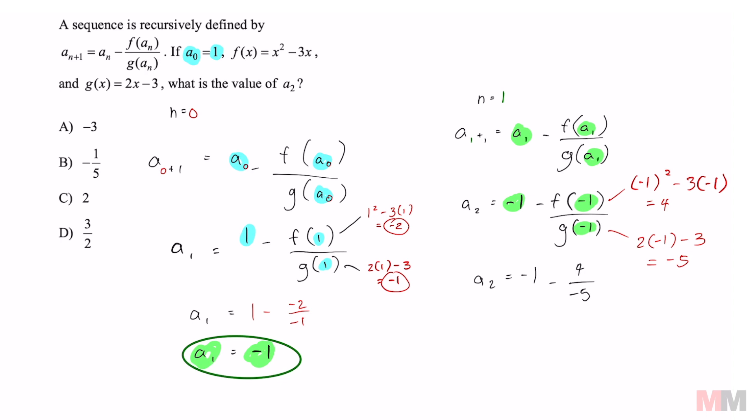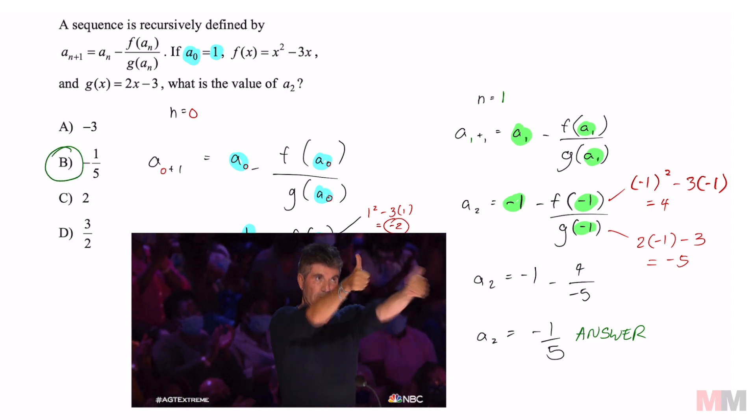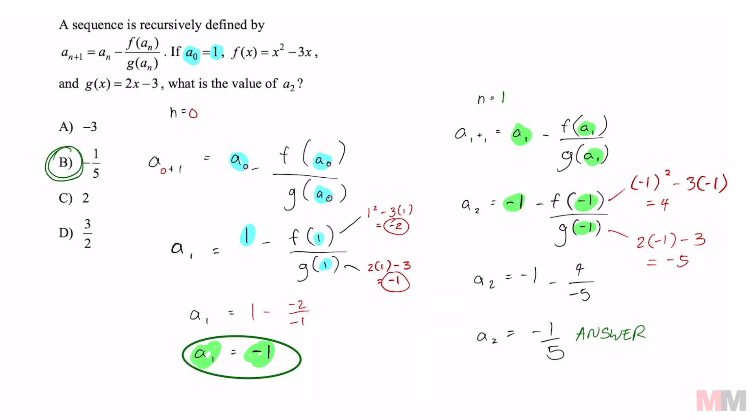And if you simplify all of that, a sub 2 is going to equal negative 1 over 5. That's choice B. That is probably harder to explain than do. But I hope it made sense. And if it did, don't forget to like and subscribe. And I'll see you on the next episode. Peace.